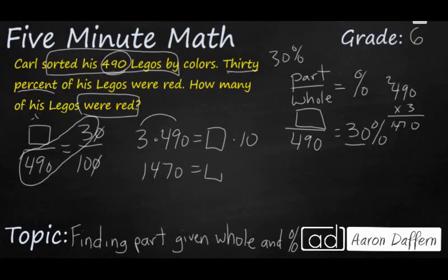1470 equals something times 10. Now we need to use our inverse operations. If we could just get rid of this times 10, we'll figure out what our unknown is. And the opposite, or the inverse of multiplication, is division. If we divide both sides by 10, times 10 and divided by 10 cancel each other out, so our unknown is by itself. So now we have 1470 divided by 10.